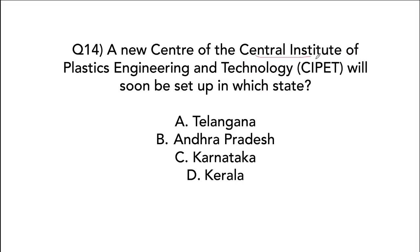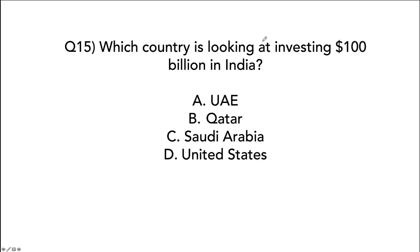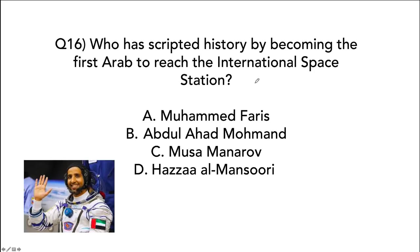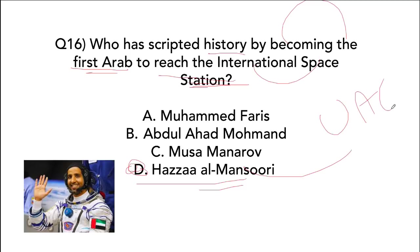A new center of the Central Institute of Plastics Engineering and Technology (CIPET) will come up in Medak, Telangana. Saudi Arabia will invest $100 billion in India, while UAE will invest $75 billion. Hazza Al-Mansouri has made history by becoming the first Arab to reach the International Space Station — he is from the United Arab Emirates.